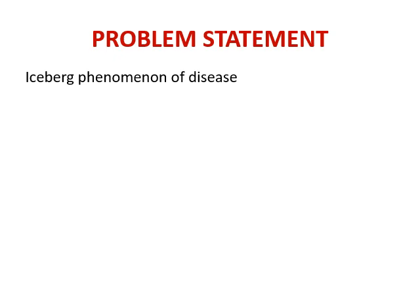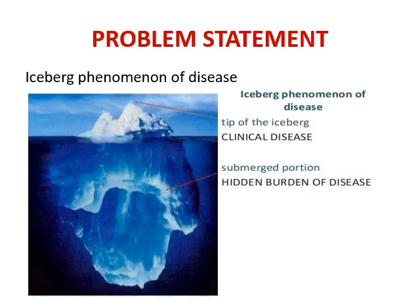Why are we doing the screening? There is a phenomenon known as the iceberg phenomenon of disease. The tip of the iceberg above the sea level represents the clinical cases which come to doctors in hospitals. The large submerged portion below sea level represents hidden cases in the community, including undiagnosed cases, carriers, and subclinical cases. We do screening to find these hidden cases, which represent the prevalence of disease in the community.